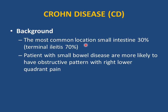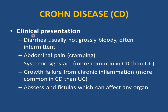Crohn disease most commonly affects the small bowel, especially the ileum, causing terminal ileitis. Small bowel disease presents with an obstructive pattern with right lower quadrant pain. Clinical presentation: diarrhea — usually non-bloody or not grossly bloody (more bloody in ulcerative colitis), cramping abdominal pain. Systemic signs are more common in Crohn than in ulcerative colitis. Growth failure or failure to thrive is a unique and important feature of Crohn disease — most kids with Crohn disease lose weight. Abscess and fistulas can affect any organ.